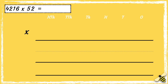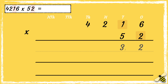Four thousand two hundred and sixteen has four thousands, two hundreds, one ten and six ones. Fifty-two has five tens and two ones. First we're going to multiply two by six: two times six is twelve. We can drop the one below in the tens column. Now we can multiply two by one ten, so two times one is two, add one more is three. Now we need to multiply two by two hundreds: two times two is four. Then we multiply two by four thousands: two times four is eight.